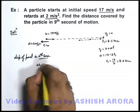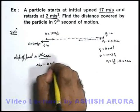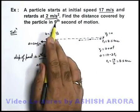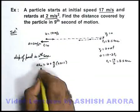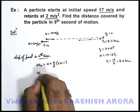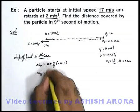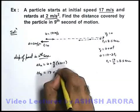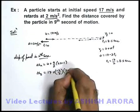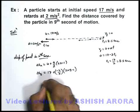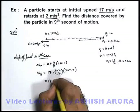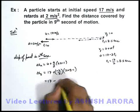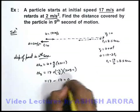The formula for nth second of motion is u plus (a/2)(2n-1). Here we are required to analyze the motion in ninth second, so we find the displacement in ninth second. This will be 17 plus a by 2, which is minus 2 by 2, times (2×9-1). Just see what you are getting: 17 minus 1 times 17. The result is zero.